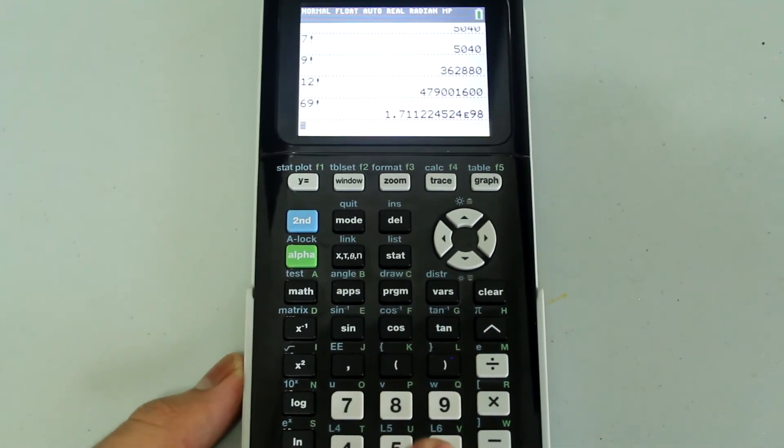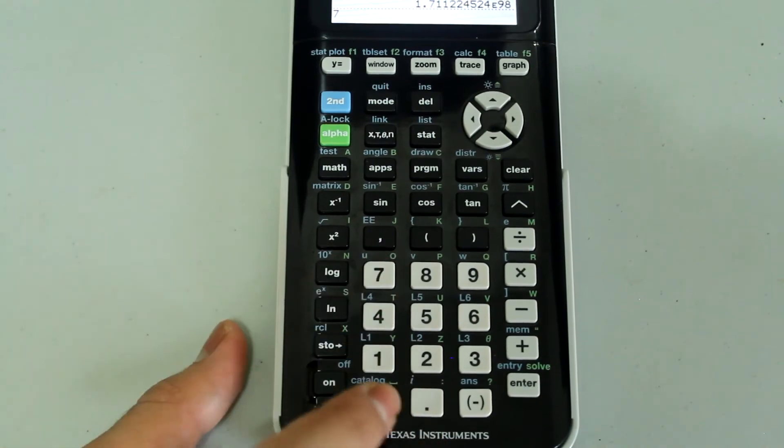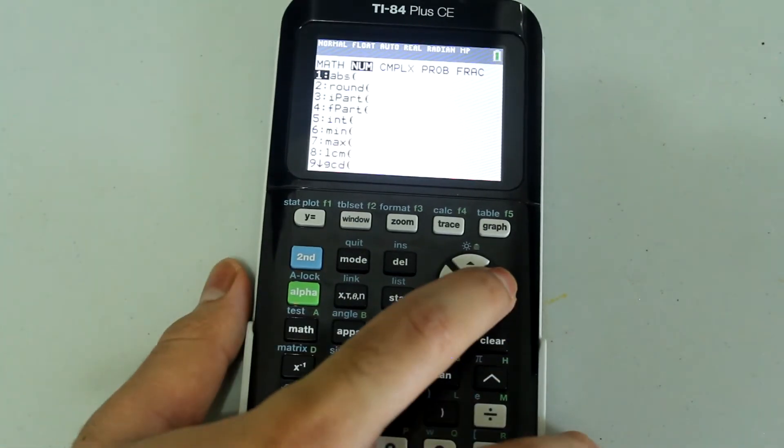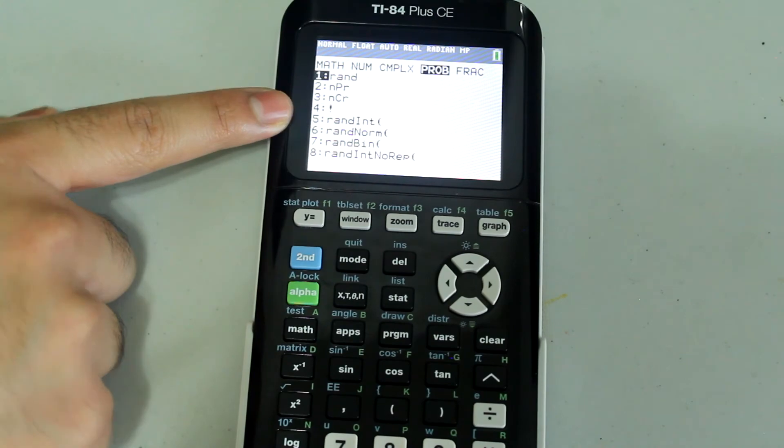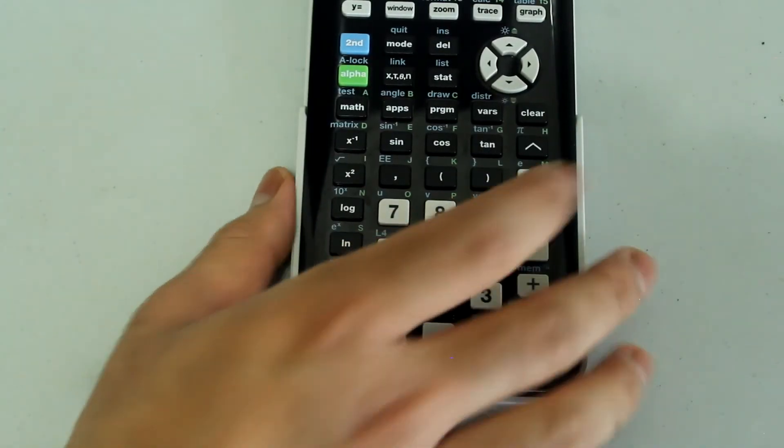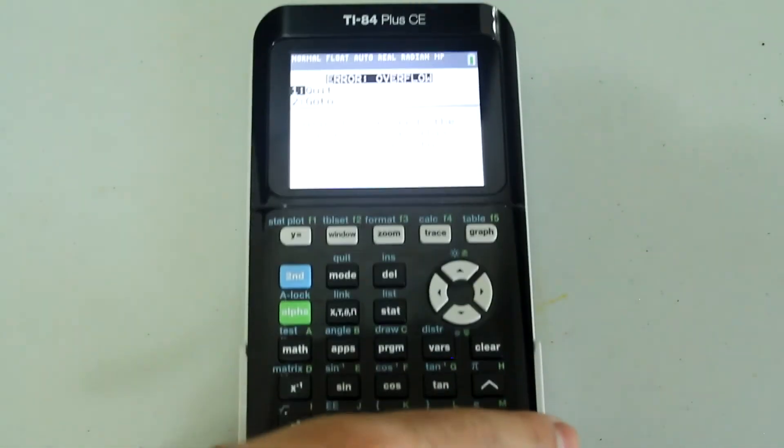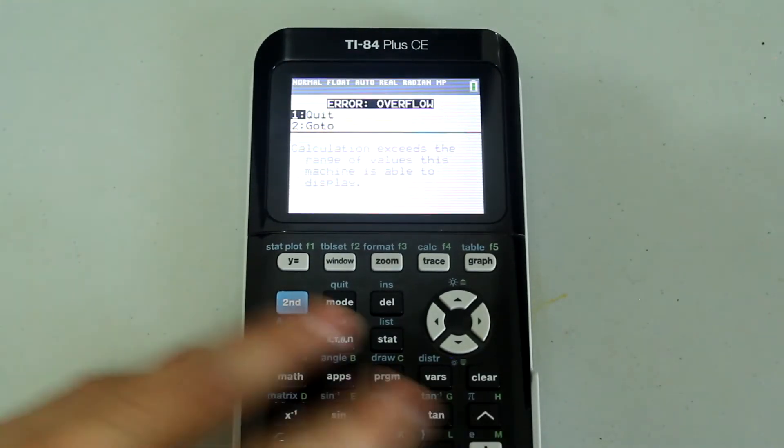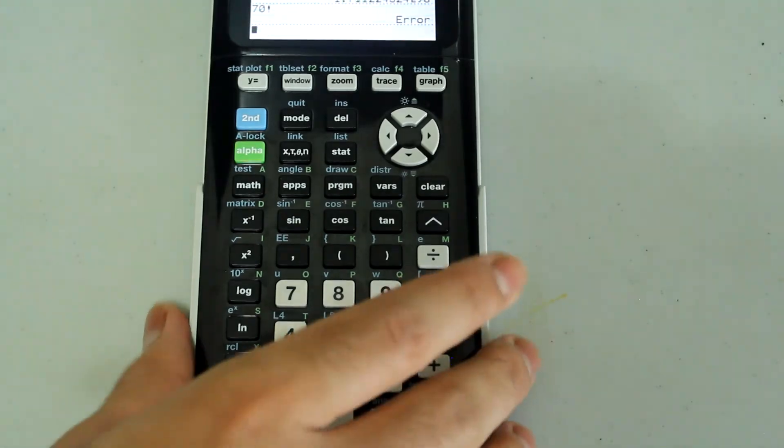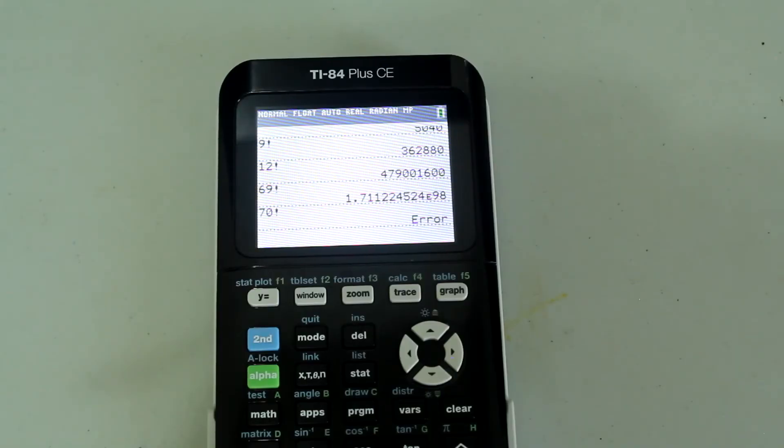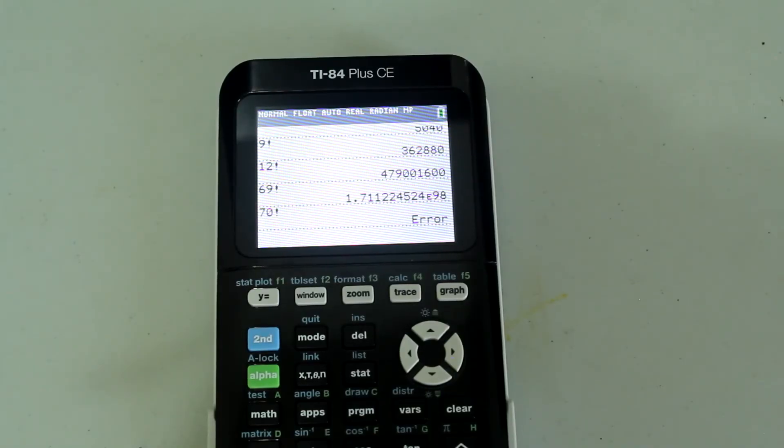But if I try to do 70 factorial - so 7, 0, go to the math option, fourth option - I have 70 factorial on the screen. If I press enter, I'll get an error message. I'm just going to quit that. And that's because these factorials can get large really quickly.